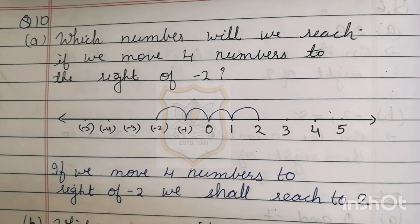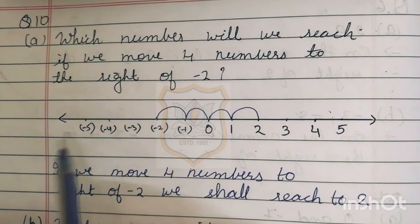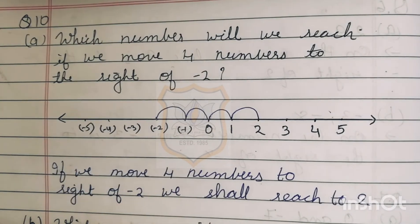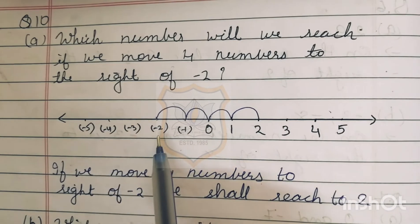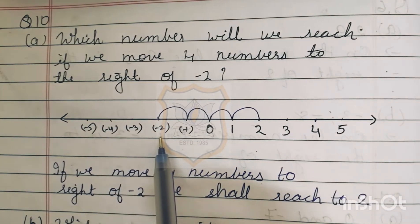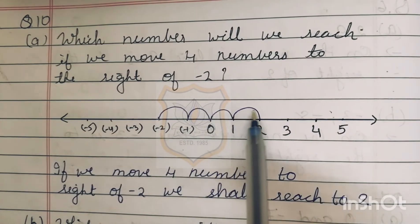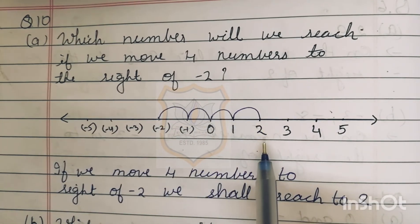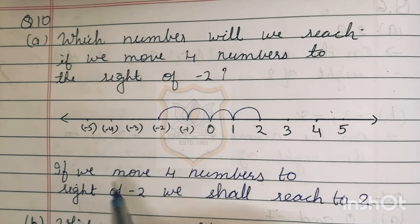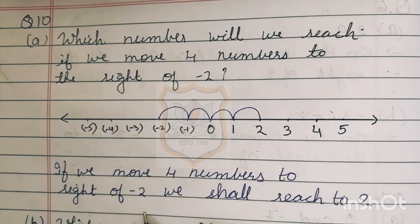Solution for part A: first draw a number line. Minus 2 is marked here. We move four steps towards the right side — 1, 2, 3, and 4 — and we reach at 2. So if we move four numbers to the right of minus 2, we shall reach 2.